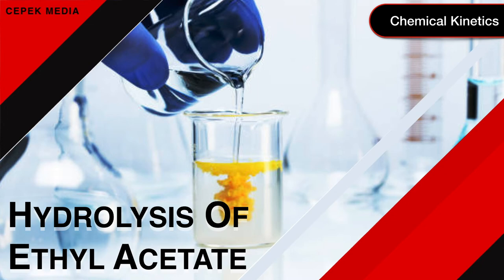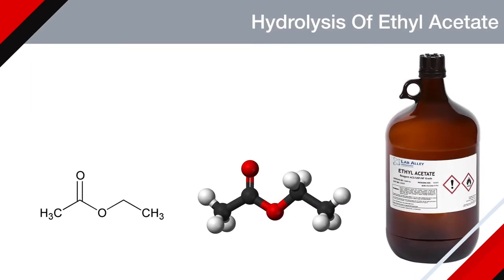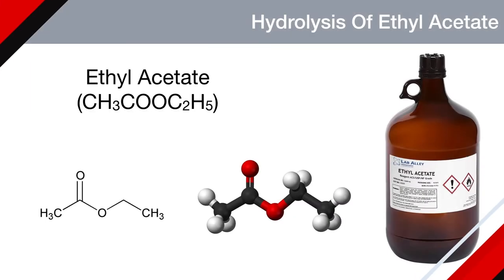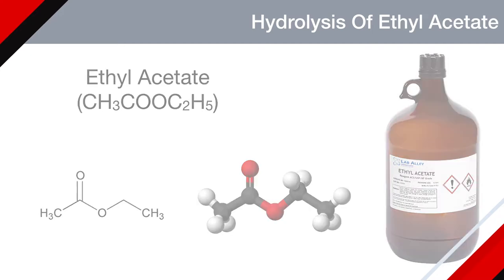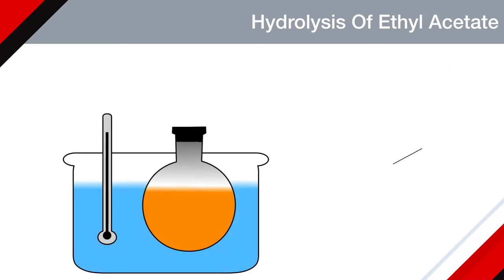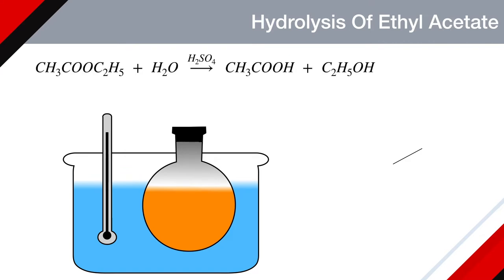Discuss the kinetics of hydrolysis of ethyl acetate. Ethyl acetate is a colorless liquid with sweet smell, used as a solvent and diluent. Ethyl acetate on hydrolysis produces acetic acid and ethyl alcohol. This reaction is catalyzed by any dilute acid, e.g. sulphuric acid or hydrochloric acid.